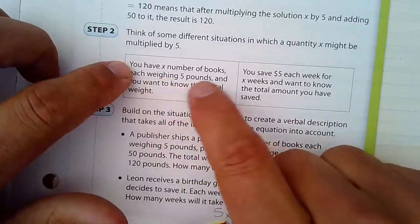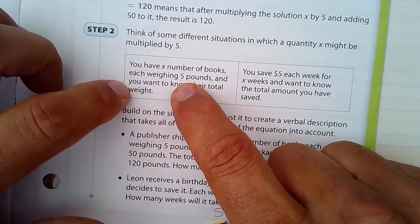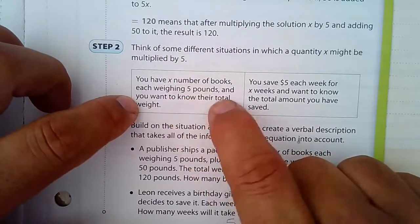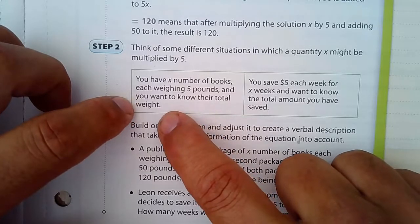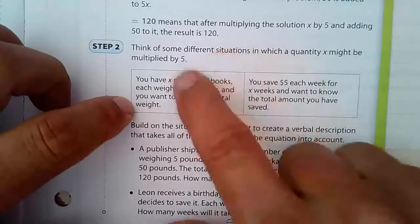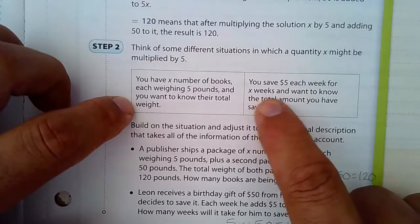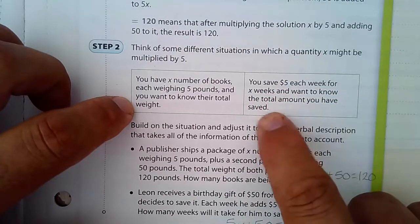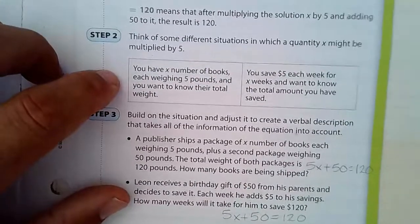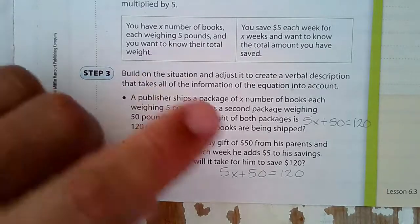Here are a couple of situations that would fit that equation. You have x number of books weighing 5 pounds each, and you want to know their total weight. This is just 5 times x. Here's another situation where it's 5 times x. You save $5 each week for x weeks, and you want to know the total amount you have saved. Now we have to build on that. We have to add in the plus 50 and the equals 120.